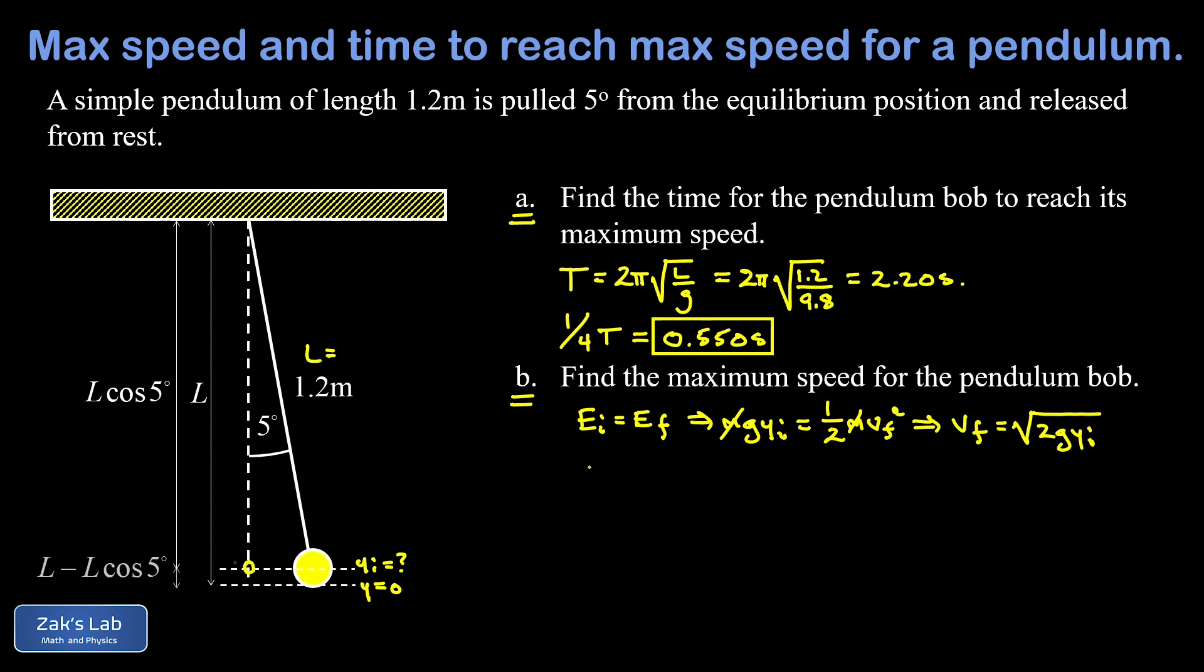So with all that worked out we're ready to solve the problem. I have v final is equal to √(2g y initial), but y initial is L minus L cosine five degrees. Let's go ahead and factor an L out while we're working, so we get √(2gL(1 - cos 5°)) inside that square root.